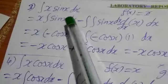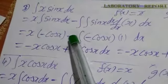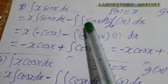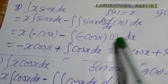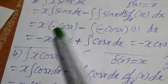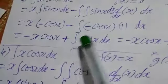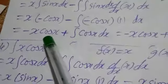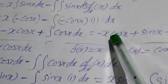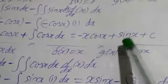Now, x — integration of sin x is minus cos x, written in brackets — minus outer integration: integration of sin x is again minus cos x, and d by dx of x is 1, into dx. Multiplying: x into minus gives minus x cos x, and minus minus gives plus integration of cos x dx. So: minus x cos x plus integration of cos x becomes sin x, plus c.